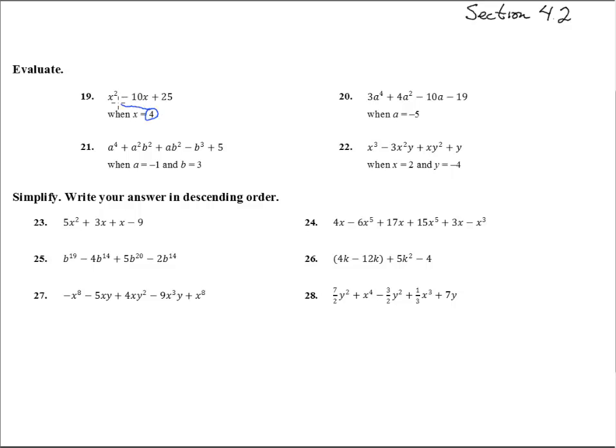So we're going to take that 4 and stick it in there. We have 4 squared minus 10 times 4 plus 25. This is 16 minus 40 plus 25. 16 minus 40 is negative 24 plus 25, that equals 1.